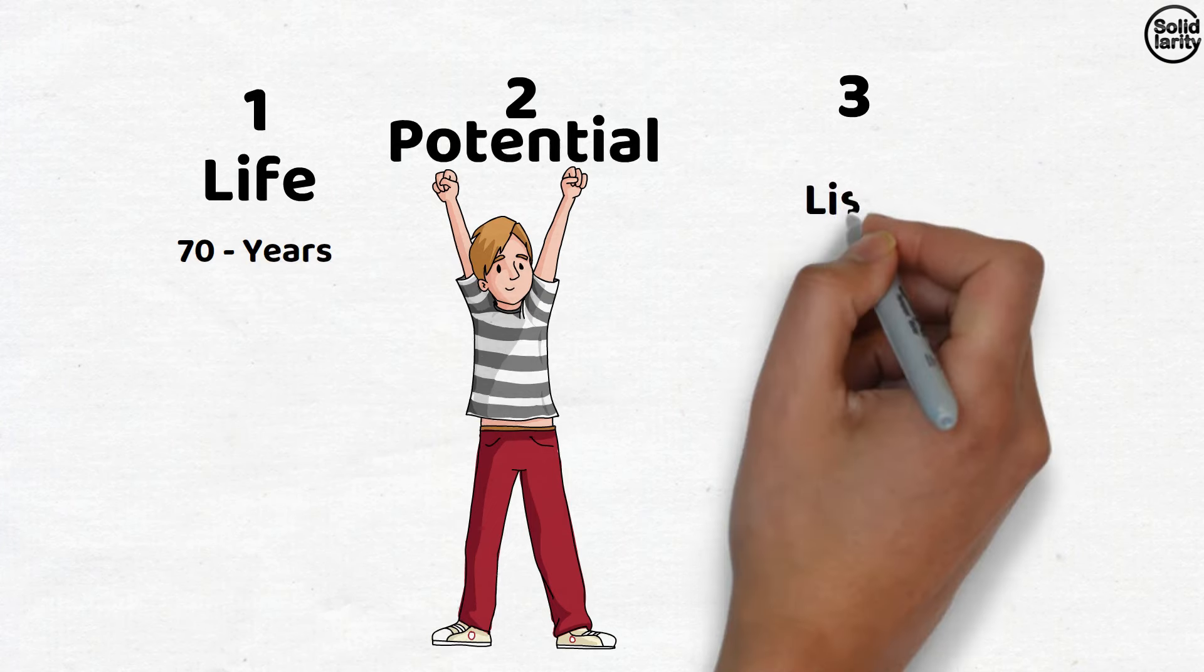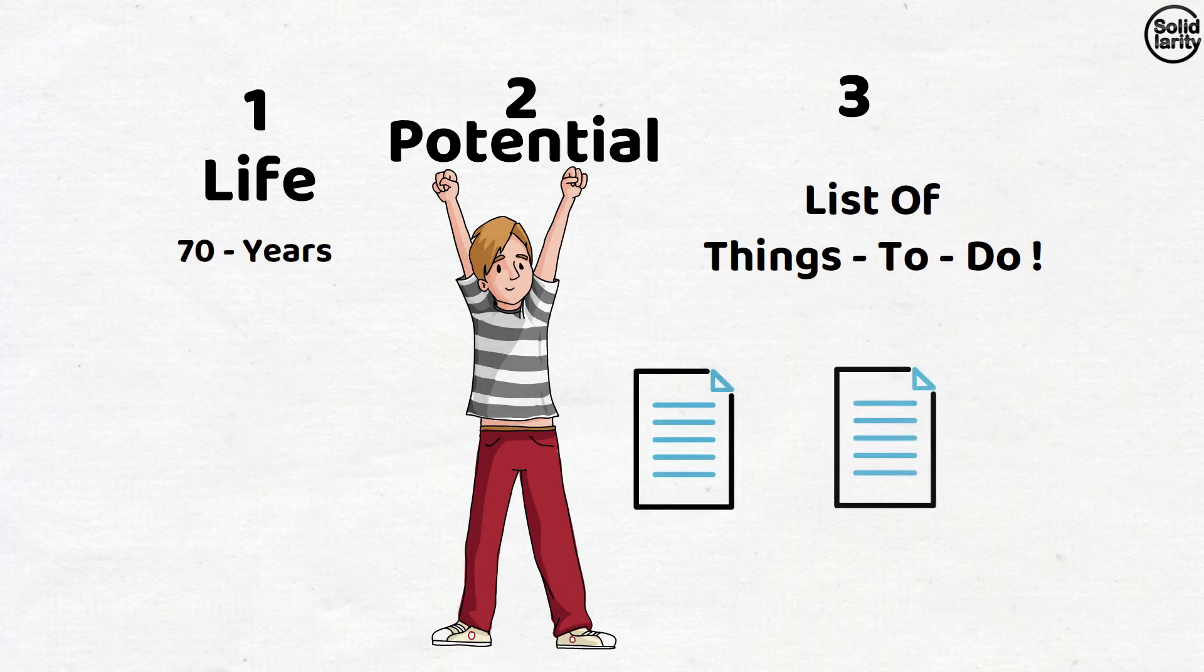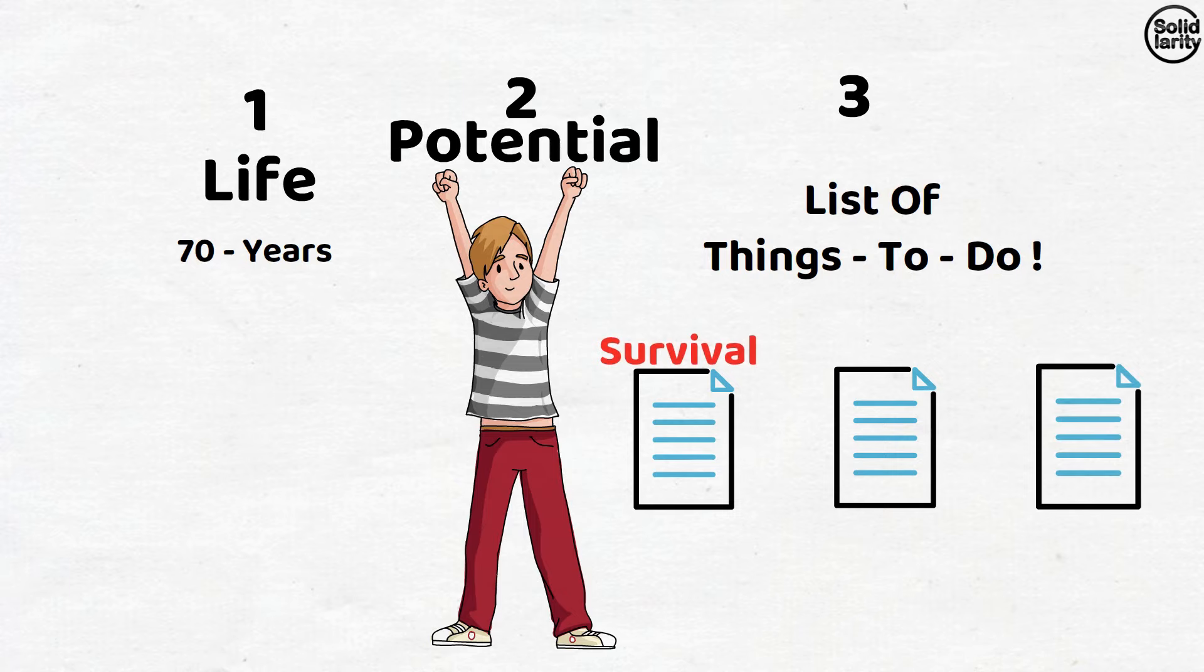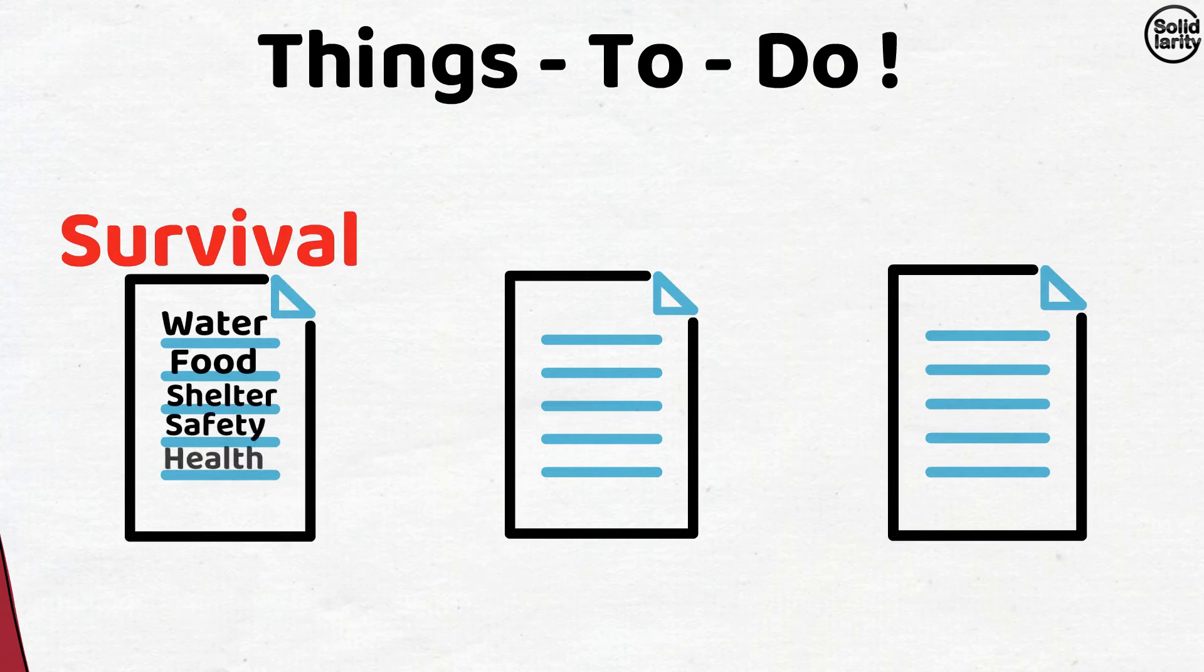Now let's check out his things to do list. He has got three kinds of lists. In the first list, there are things that he needs for survival like water, food, shelter, safety, and so on.